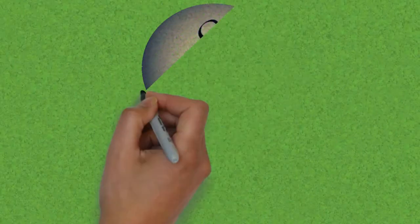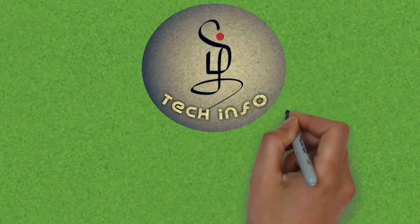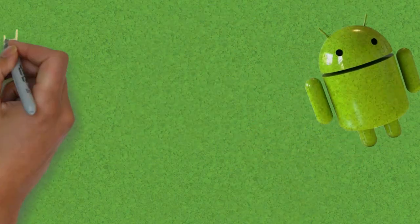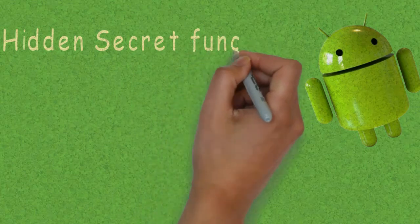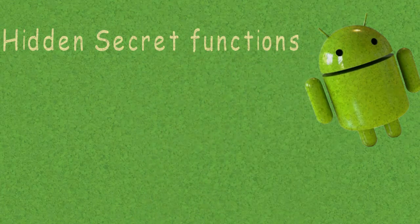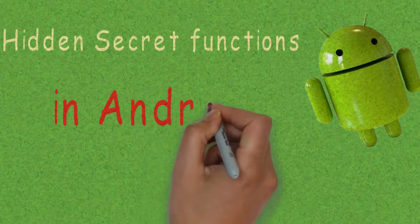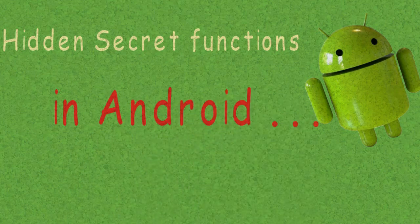Hello friends, welcome. You are looking for Tamil Tech Info. What we are talking about today is, in our Android mobile, we have a lot of tips and secrets. If we change a few settings, we can see how to activate them. This is why we don't need to root your phone. You can activate the new settings.